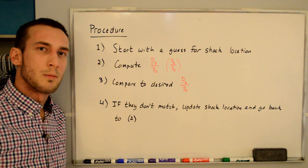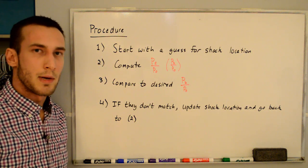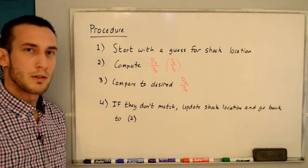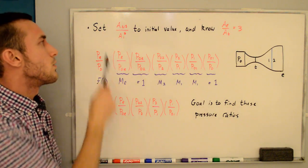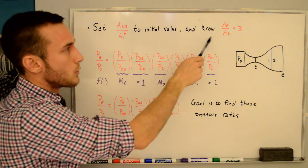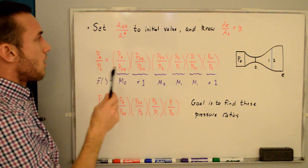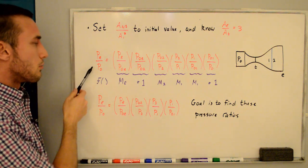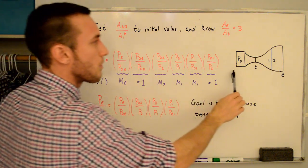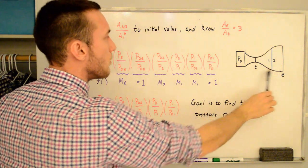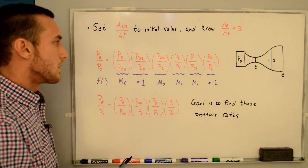After going through the math on the whiteboard I'll show my MATLAB code, which uses a bisection method for the iterations. The first step is to set ANS over A1 star to an initial value. We know AE over AT equals 3. To solve for PE over P0, we step through the whole nozzle, relating PE/P0 using pressure ratios that are easier to find, stepping from the back of the nozzle up to the reservoir.